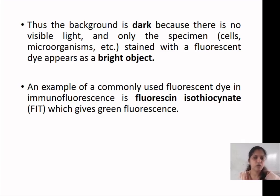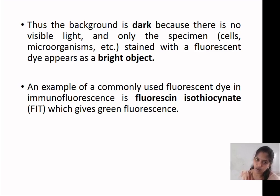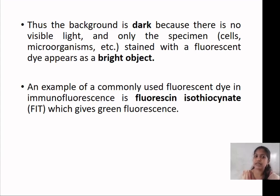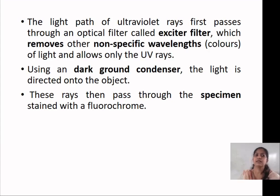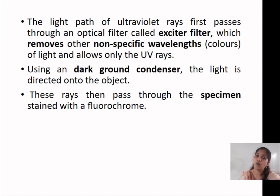An example of a main fluorochrome is fluorescein isothiocyanate, which gives green fluorescence. The light path of ultraviolet rays first passes through an optical filter known as the exciter filter, which removes other non-specific wavelengths of light and allows only ultraviolet rays through.